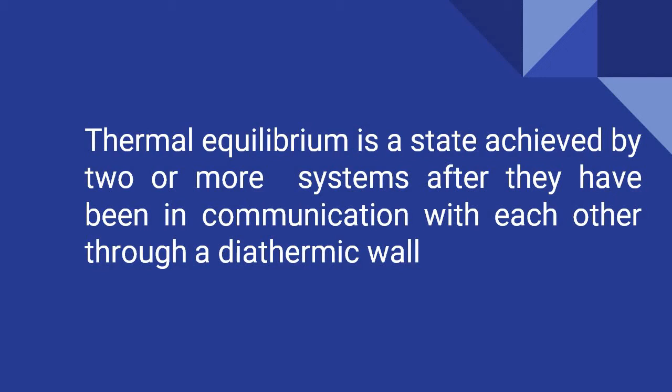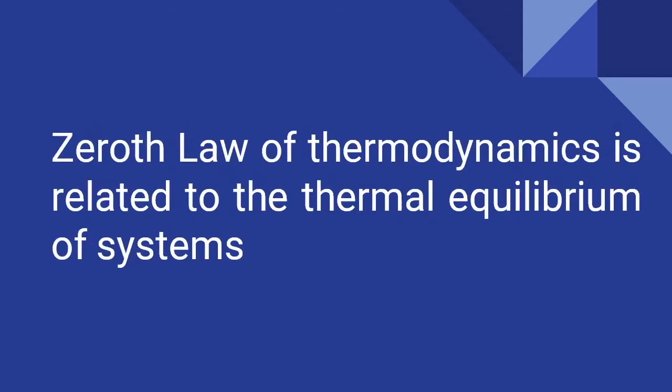When you keep two systems in contact — one at a higher temperature and the other at a lower temperature — the hot body becomes cool by a reduction in its temperature and the cold body will have an increase in its temperature. After some time, both will attain the same temperature. When they are kept in contact through a diathermic wall, heat transfer is possible, and you can say that these two systems are in thermal equilibrium. The zeroth law of thermodynamics is related to thermal equilibrium of systems.